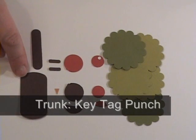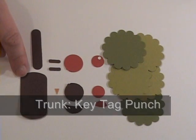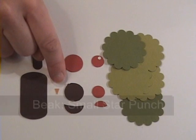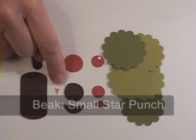I used the key tab punch for the trunk of the tree. And I actually used the star and I'll show you how I did this, the star punch just to make the bird beak.